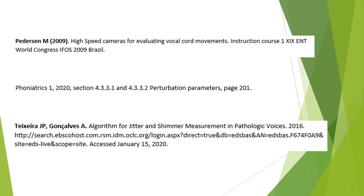We have had a long experience with jitter and shimmer, and as presented in the pictures in this presentation, there are many problems to understand shimmer. The abduction of the vocal folds during intonation is varying from the back to the front. The problem is also that the variation depends on whether you use the audio, glottal area waveform, or trajectories as a source.